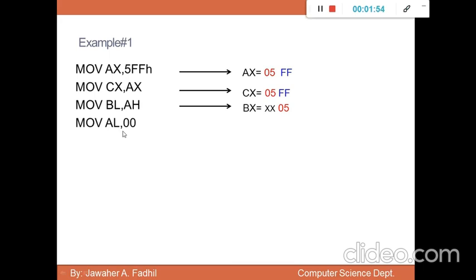MOV AL, 00. Now the current value of AL is FF. This instruction will change the value of AL to 00, but AH will stay the same. The value of AL will be 00, and AH will stay 05.